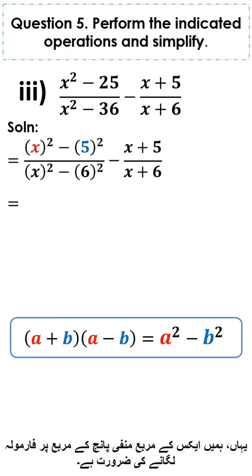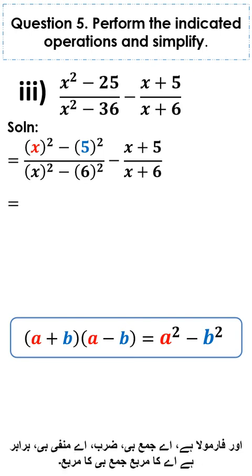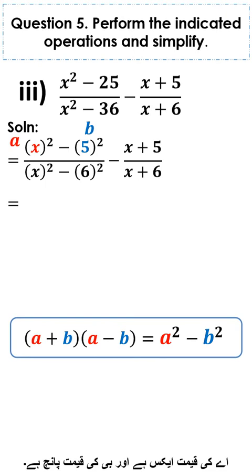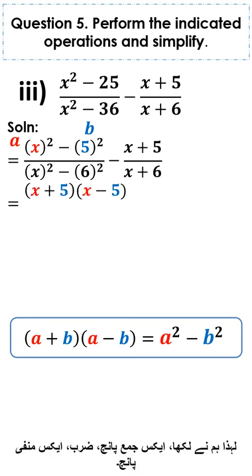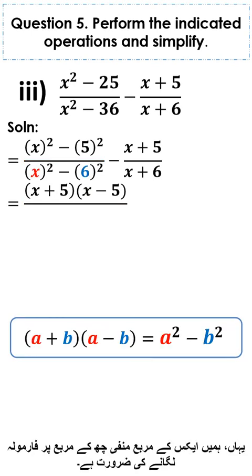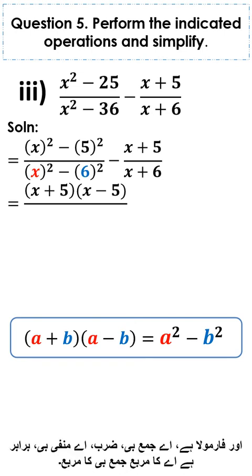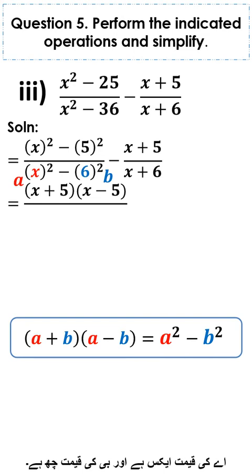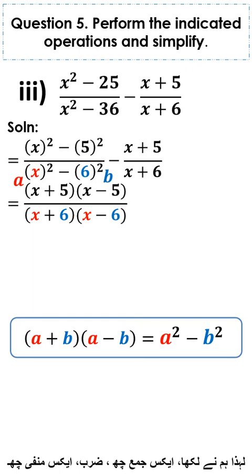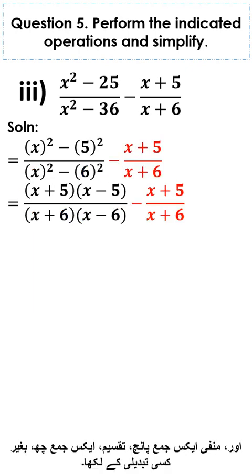Applying the formula a square minus b square equals a plus b into a minus b: for x square minus 5 square, with a equals x and b equals 5, we write x plus 5 into x minus 5. For x square minus 6 square, with a equals x and b equals 6, we write x plus 6 into x minus 6. Minus x plus 5 divided by x plus 6 remains as is.